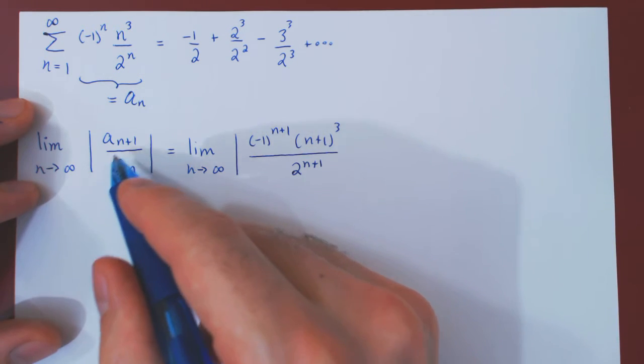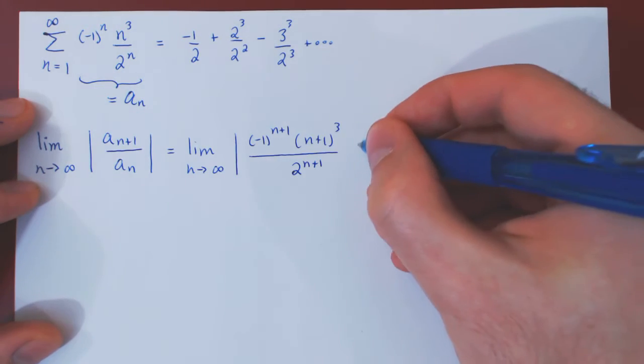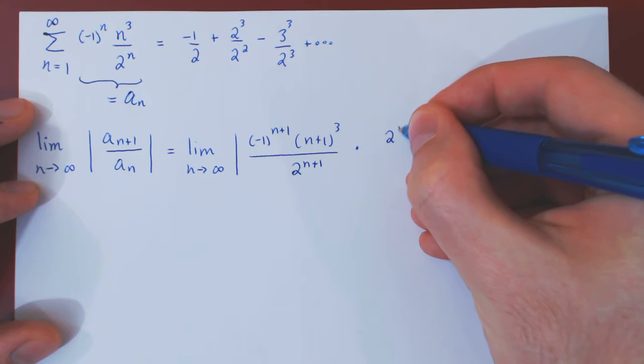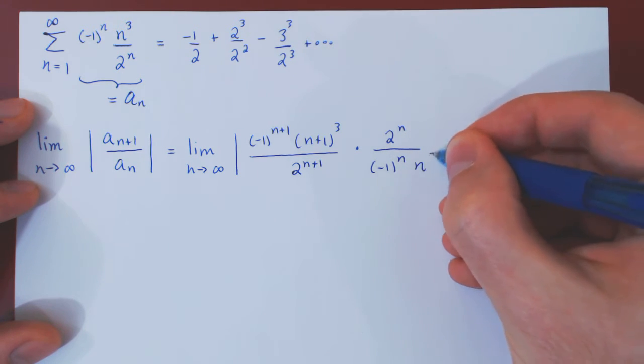And dividing by a_n means we are multiplying by the reciprocal, therefore times 2^n over (-1)^n times n^3.